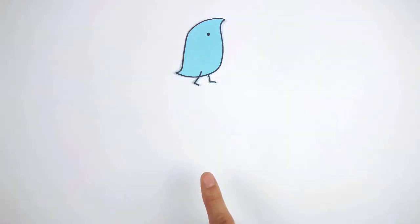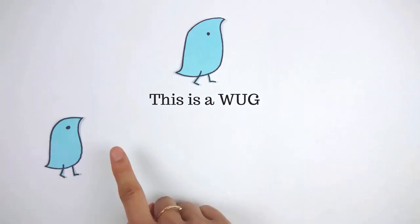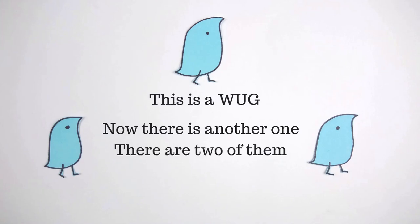For example: This is a WUG. Now there is another one. There are two of them. There are two blank.